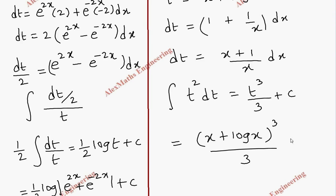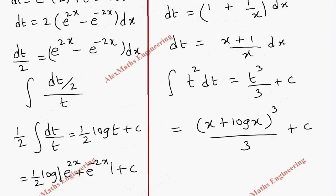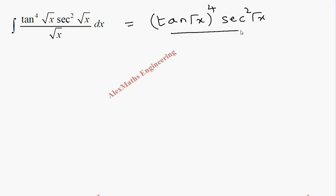Coming to the third problem, we have integration of tan⁴(√x) into sec²(√x) into dx by √x. Let's rewrite this as tan(√x) to the power 4, then sec²(√x) divided by √x, dx. For the inner function, let t equal to tan(√x).